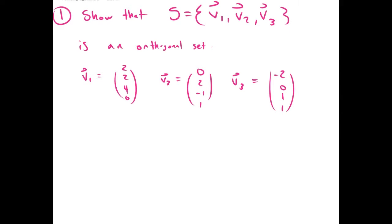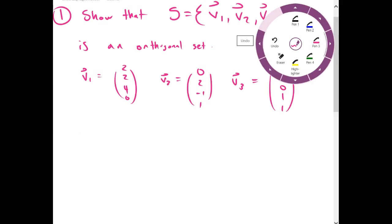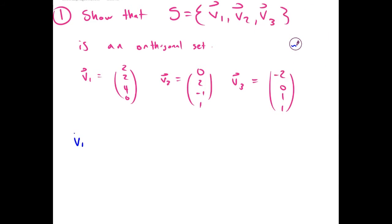So the way we show vectors are orthogonal is by taking their dot product, and if their dot product is 0, they're orthogonal.